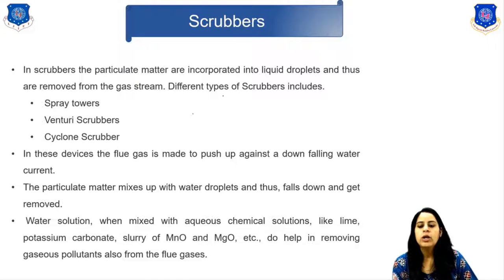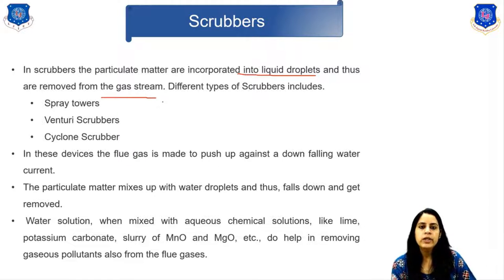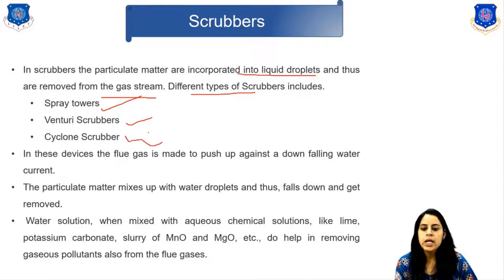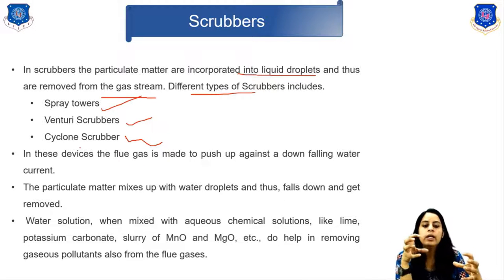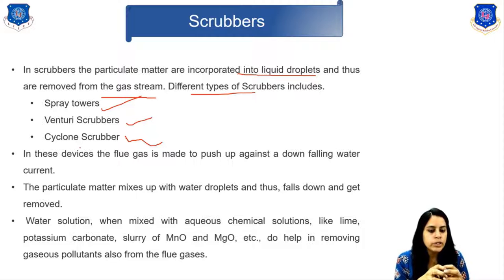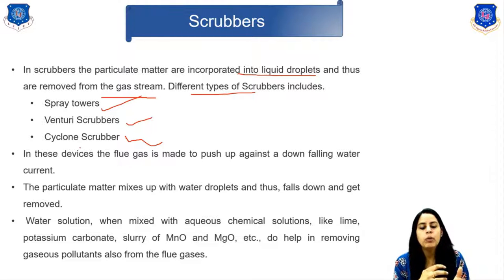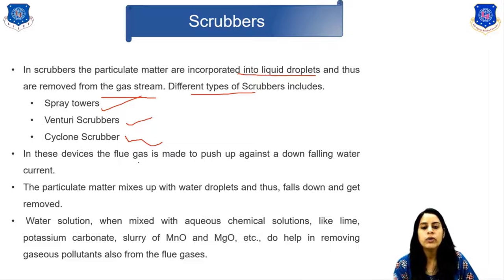The next device is the scrubber. In a scrubber, particulate matter is incorporated into liquid droplets and removed from the gas stream. Three types of scrubbers are included: spray tower, venturi scrubber, and cyclone scrubber. In these devices, the flue gas is made to flow against a downfalling water current, so the particulate matter mixes with water droplets and falls down to be removed. When water is mixed with aqueous chemical solutions like lime, potassium carbonate, or slurries of MnO and MgO, it also helps in removing gaseous pollutants from the flue gases.